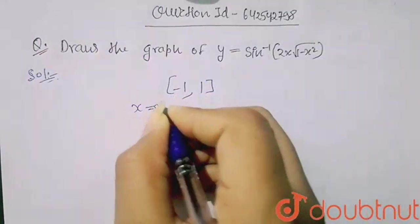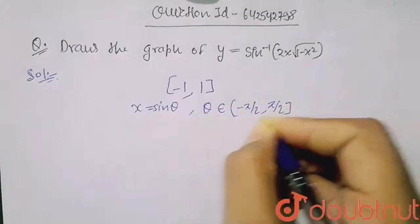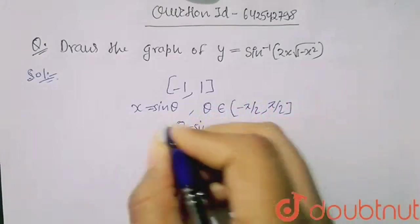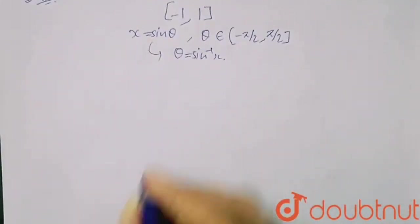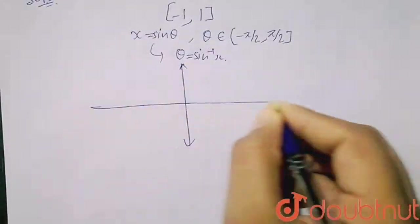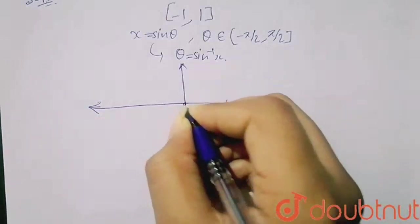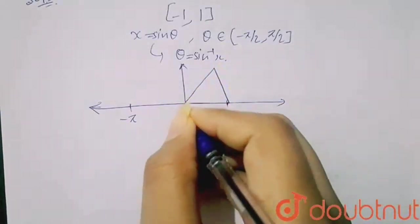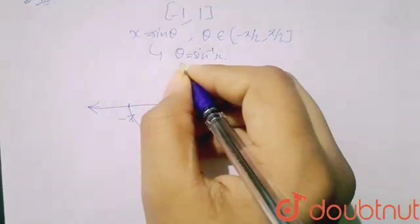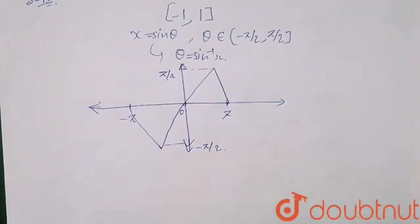So when you put x equals sin theta, here theta belongs to minus pi by 2 to pi by 2 and the value of theta equals sin inverse x from this. The graph of normal sin inverse x, I am making just the normal graph. This is pi, this is my 0 and here it is minus pi. So this graph will be like this, going till pi by 2 and here till minus pi by 2. This is the normal graph of theta equals sin inverse x.